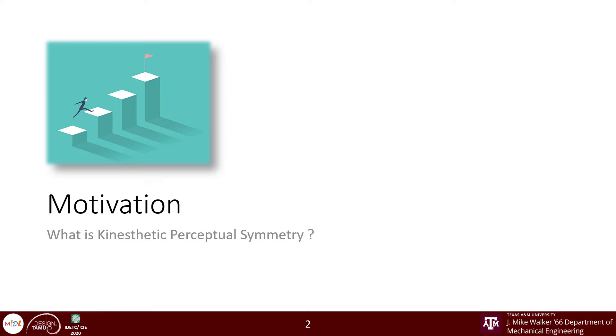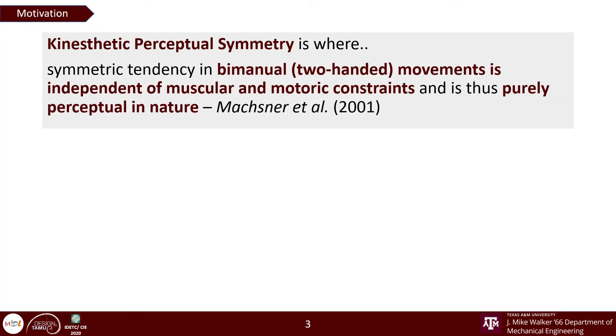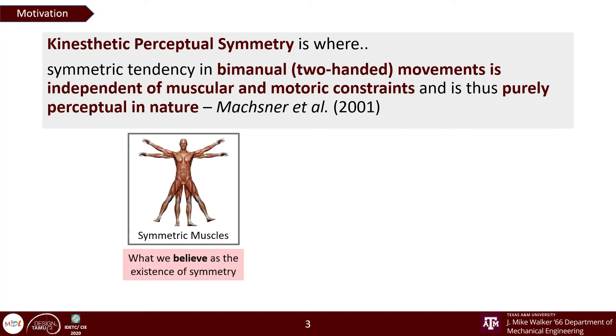So what is Kinaesthetic Perceptual Symmetry? Kinaesthetic Perceptual Symmetry, as seen from the point of physical actions, is where symmetric tendency in bimanual movements is independent of muscular and motoric constraints and is thus purely perceptual in nature. This originates from a common misconception that symmetry exists only in our actions, when muscles or joints placed symmetrically are activated together.